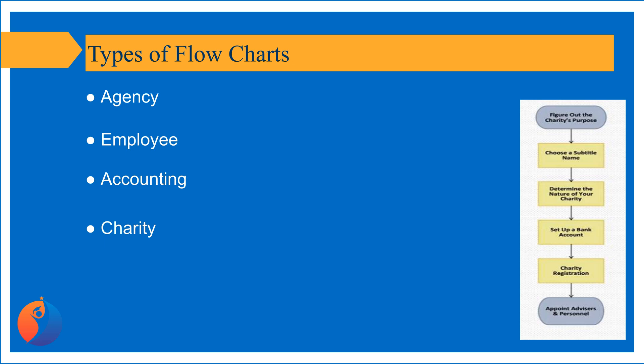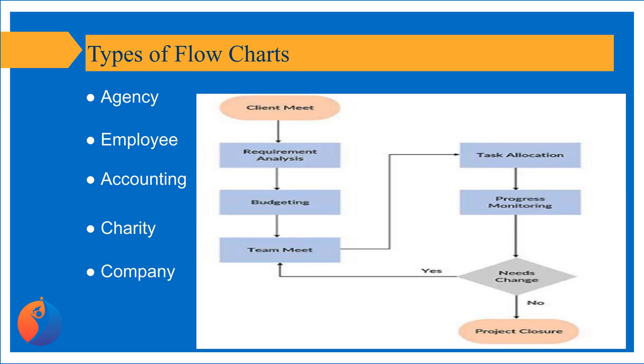Charity: A charity flowchart is a type of diagram that charitable organizations use to assist them with their procedures. Charities often use flowcharts that guide a donor through selecting the method that will provide the greatest benefit from their lifetime gift. Company: A company flowchart is a visualization tool of the business process that a company follows, providing a top-down comprehension of how a system operates and illustrating the organization's structure.